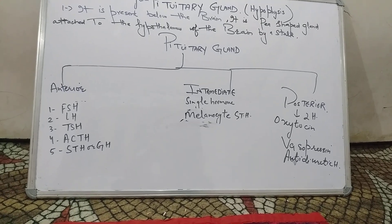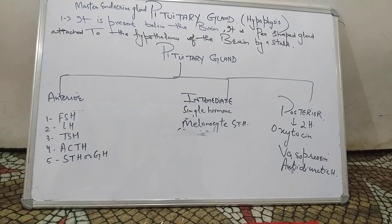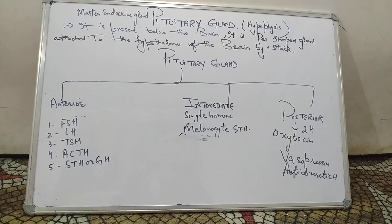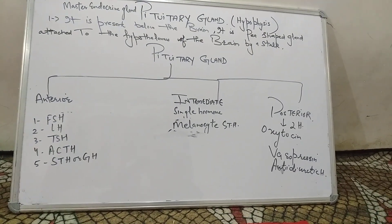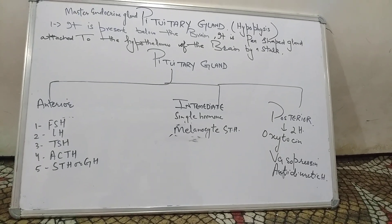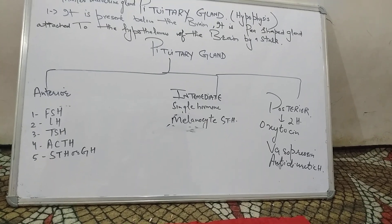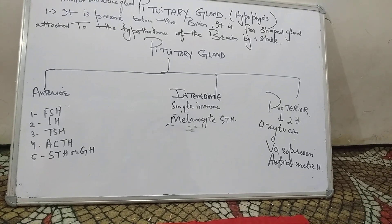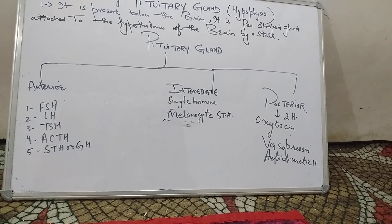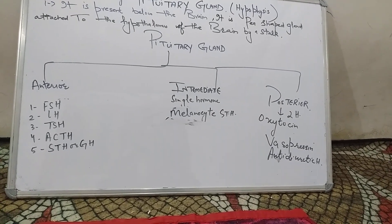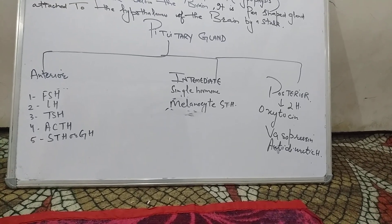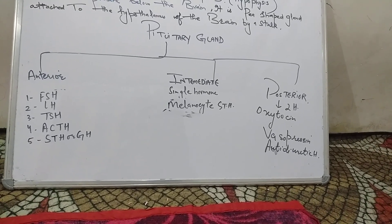The hormones released from the anterior lobe are: FSH (follicle stimulating hormone), LH (luteinizing hormone), TSH (thyroxine stimulating hormone), ACTH (adrenocorticotropic hormone), and STH (somatotrophic hormone), also called growth hormone. The intermediate lobe releases only one hormone called melanocyte stimulating hormone.